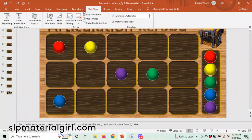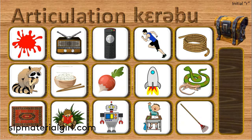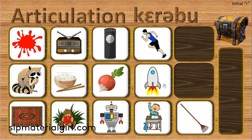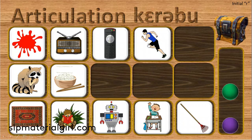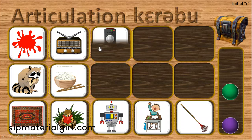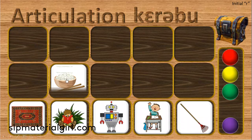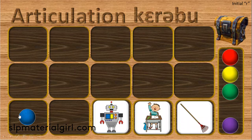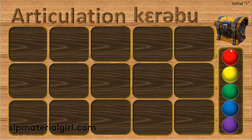Let's go to Slideshow from Current Slide. Here is our dynamic game board — we're doing Initial R. We've got rope, reptiles, rocket — we found the green ball. Radish, run, remote, radio — we found the yellow ball. Red, raccoon, rice, reed, rug — we found the last ball. And clicking through the last three we have robot, raise your hand, raise, and rake. So we've got all five balls.